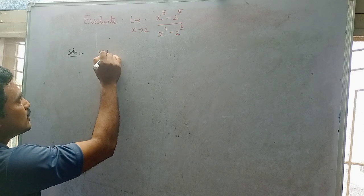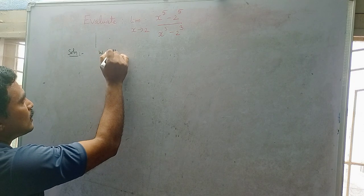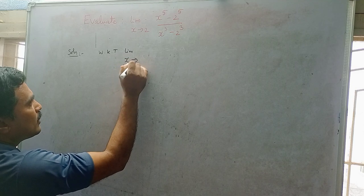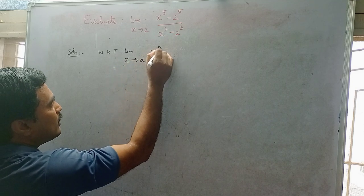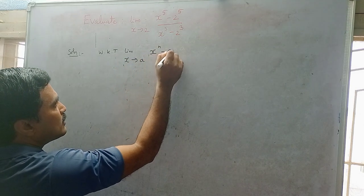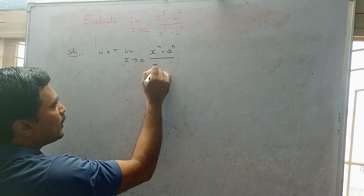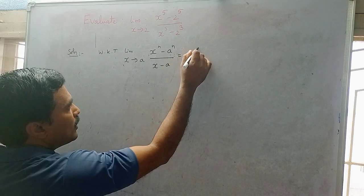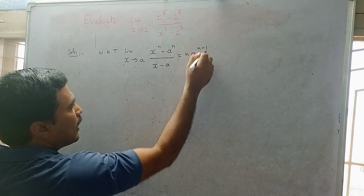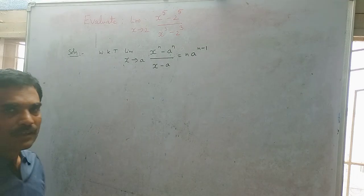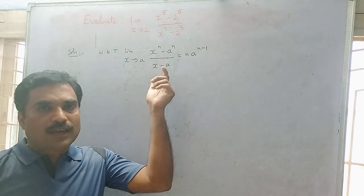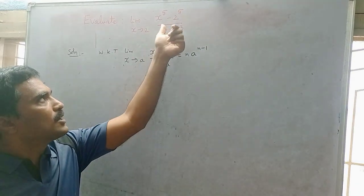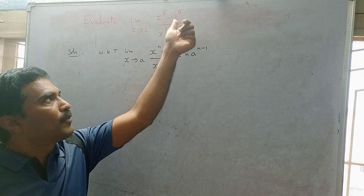We know that the limit as x tends to a of (x^n minus a^n) divided by (x minus a) equals n times a^(n-1). Now looking at our problem: the limit as x tends to 2 of (x^5 minus 2^5).